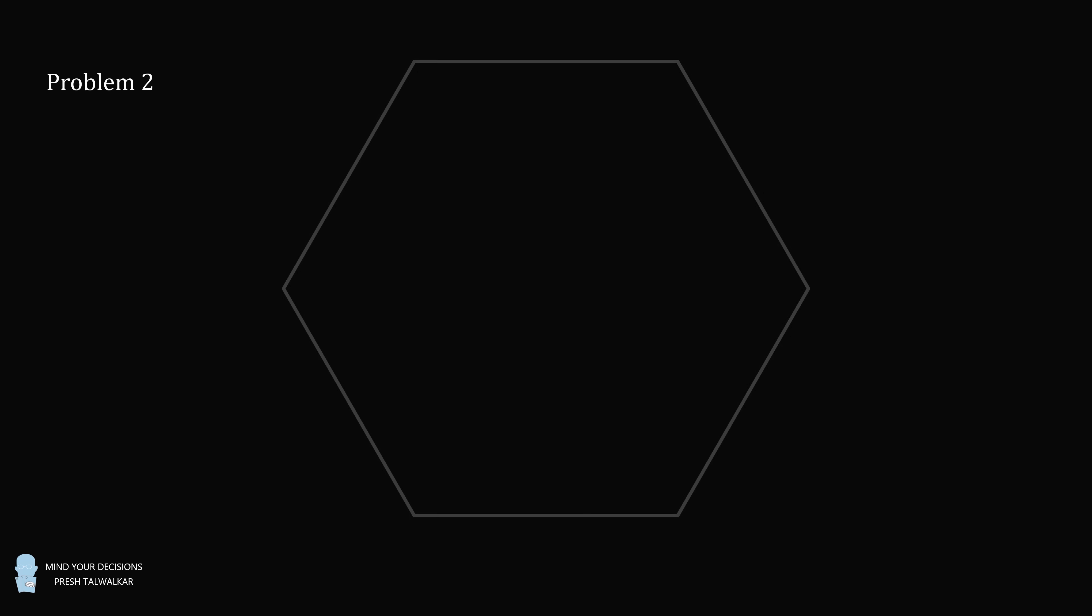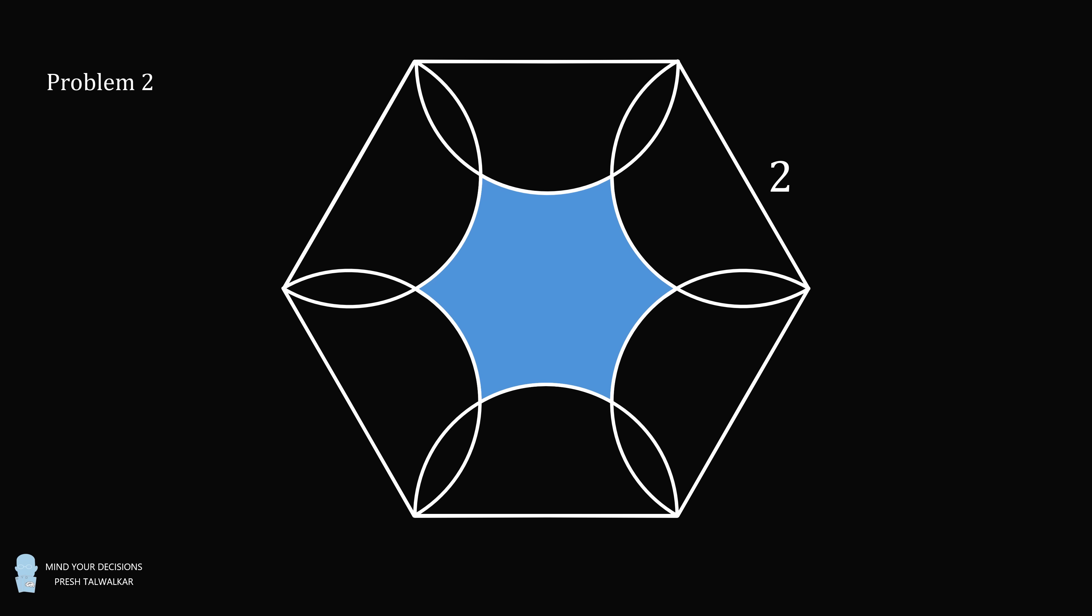Problem 2. A regular hexagon has a side length equal to 2. In the interior of the hexagon, construct a semicircle on each side. The question is, what is the shaded area equal to?